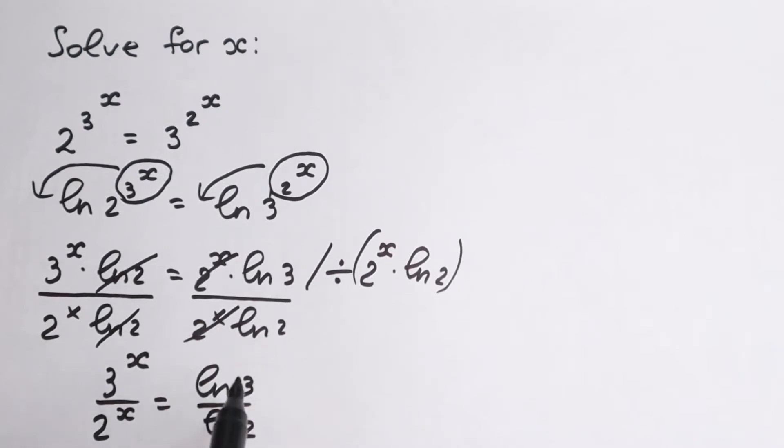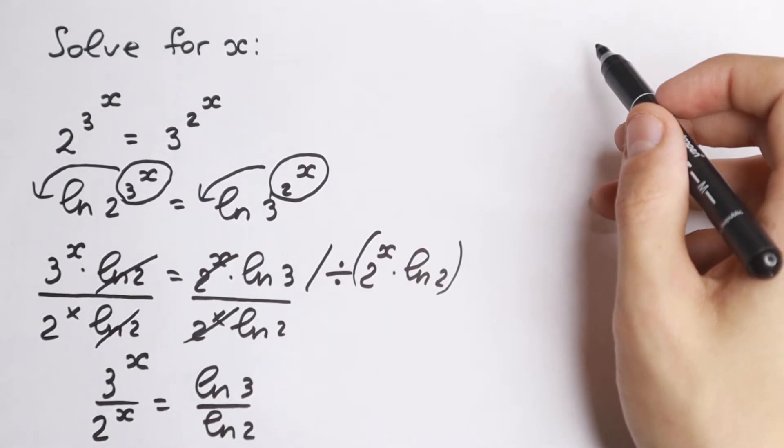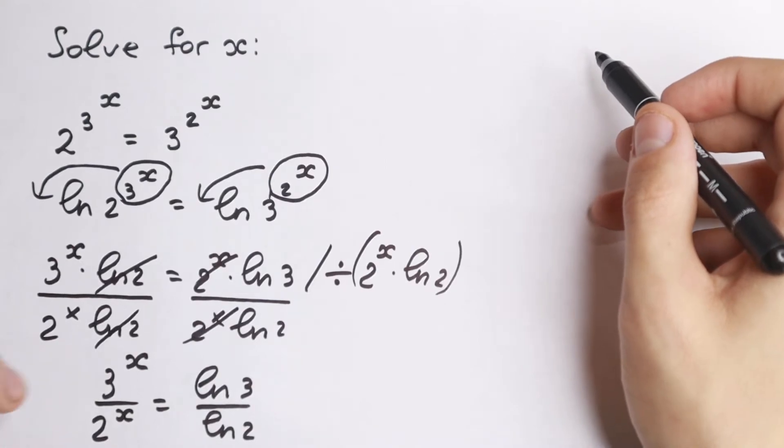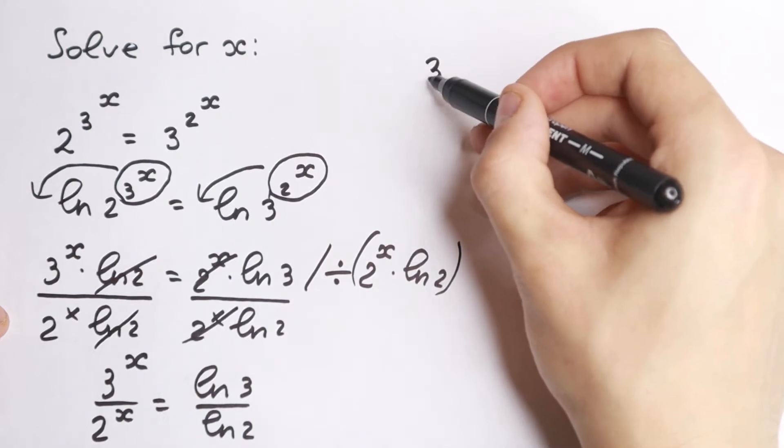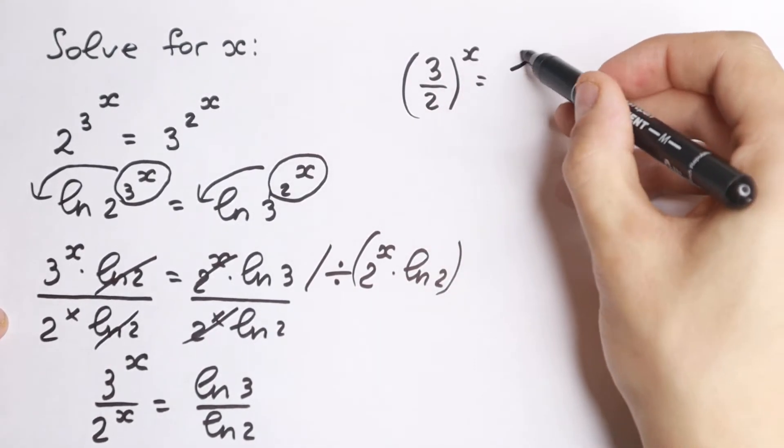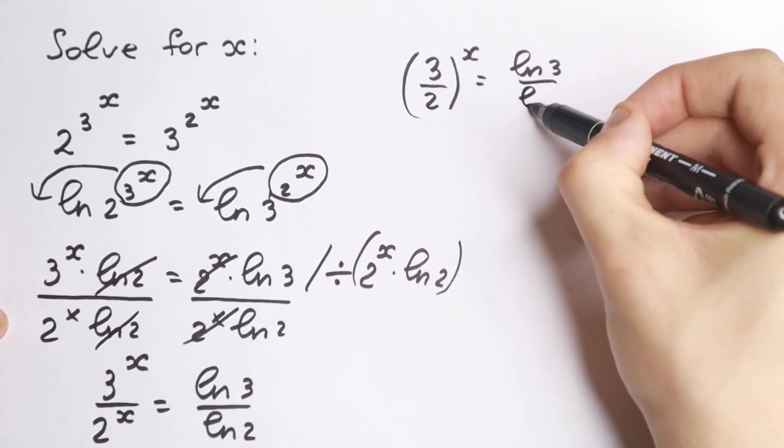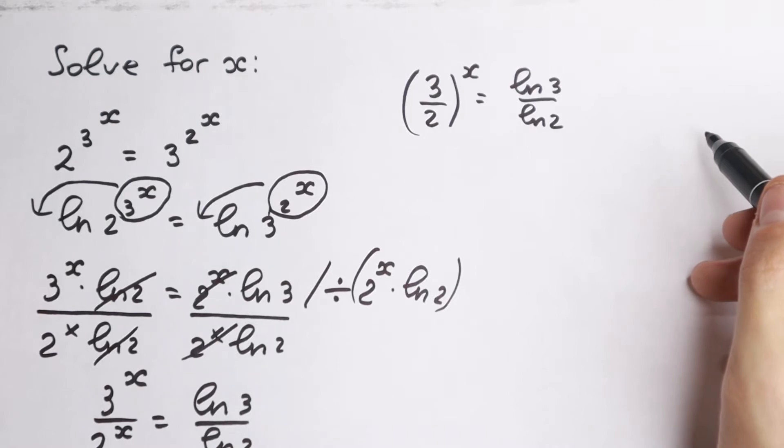But what about left hand side? We need to know a really good rule. If we have a situation like that, different base the same exponent, we can write it as 3 half to the power x. We can write it equal to natural log 3 over natural log 2.